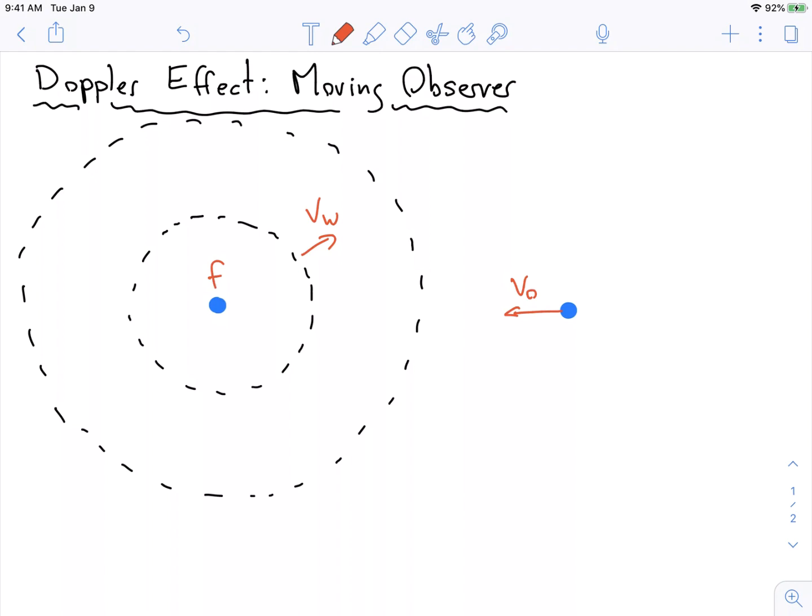Let's think about this once again in terms of how this observer sees the wavefronts hit them. If this observer is moving towards these wavefronts, and these wavefronts are moving out towards it, it means that each wavefront will hit the observer quicker than it would have normally done.